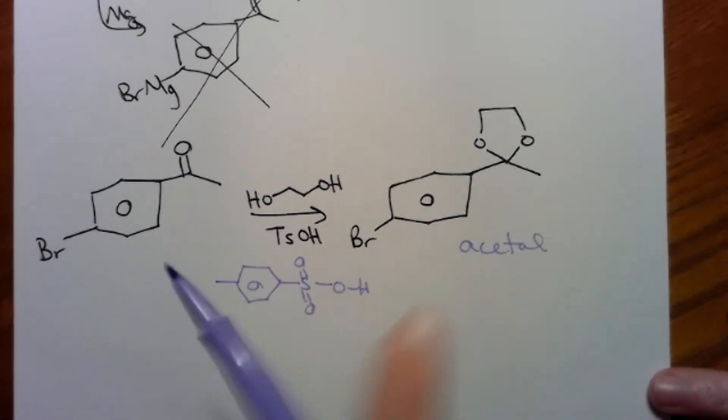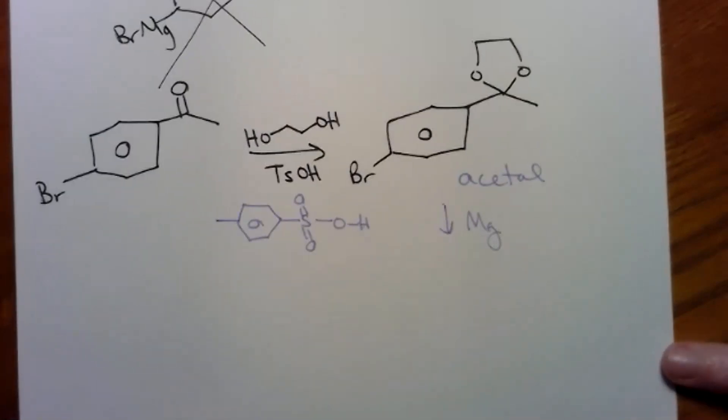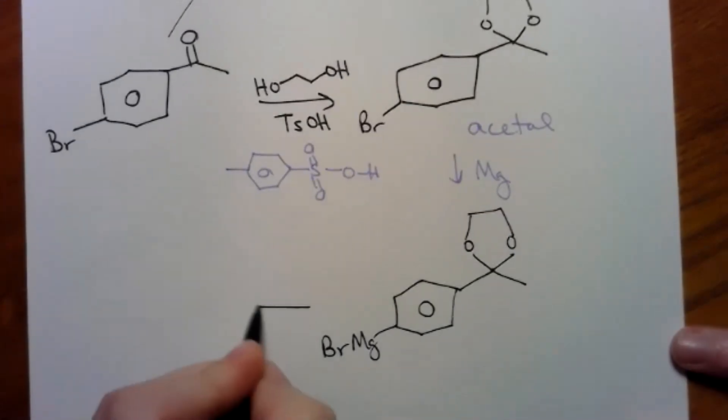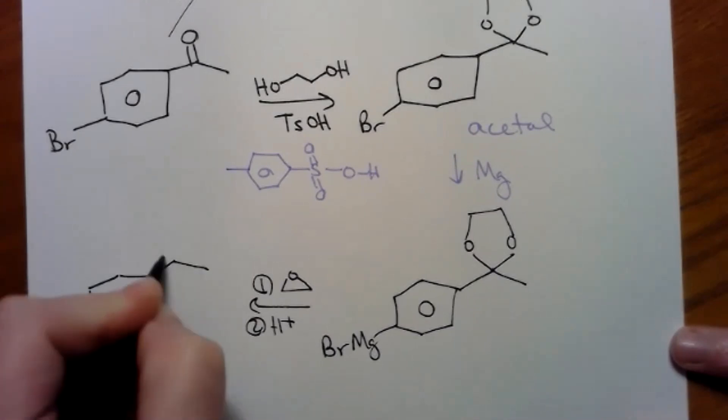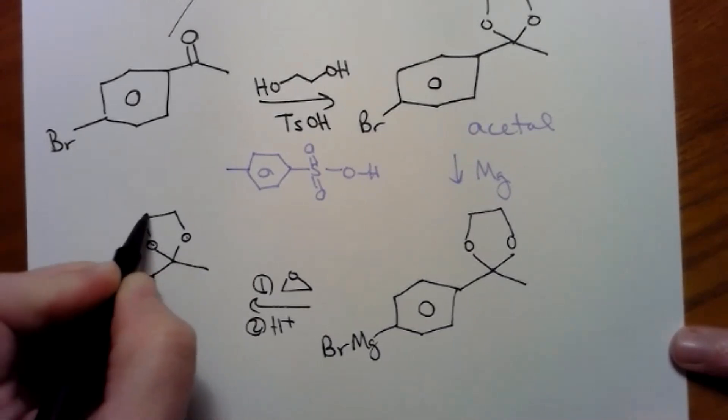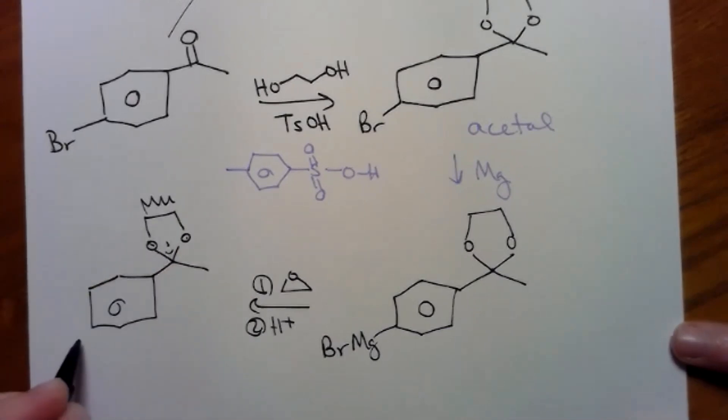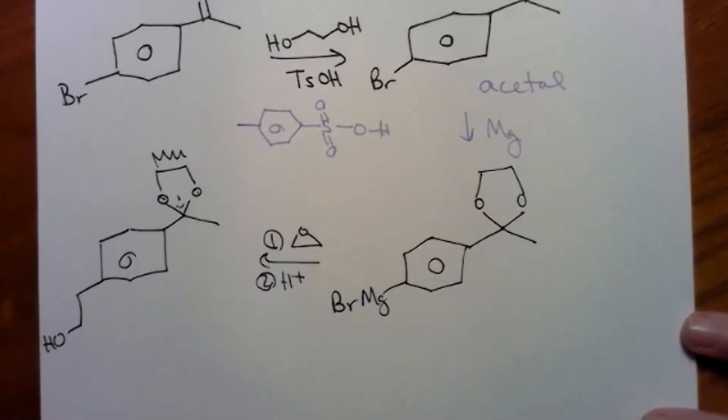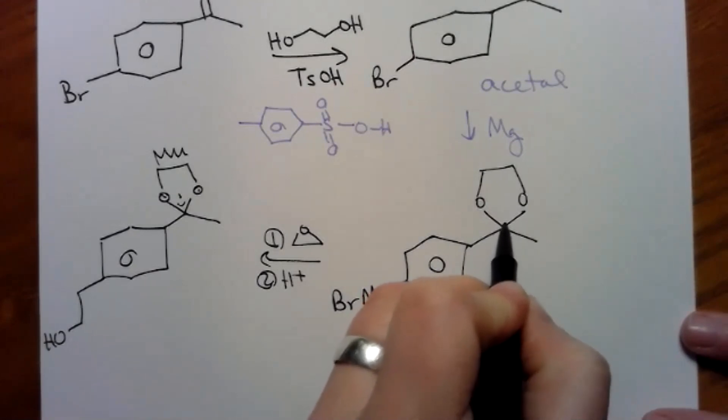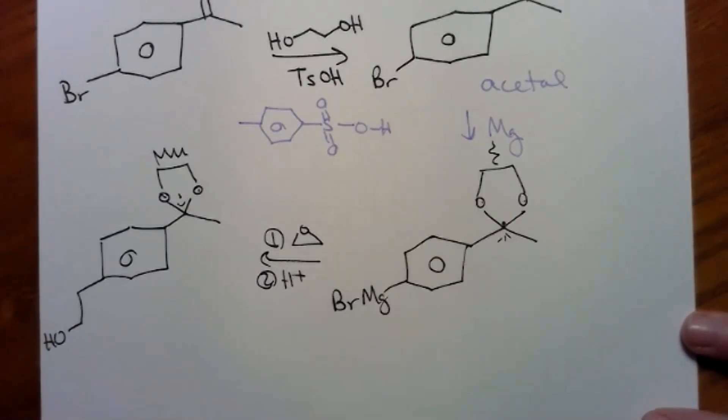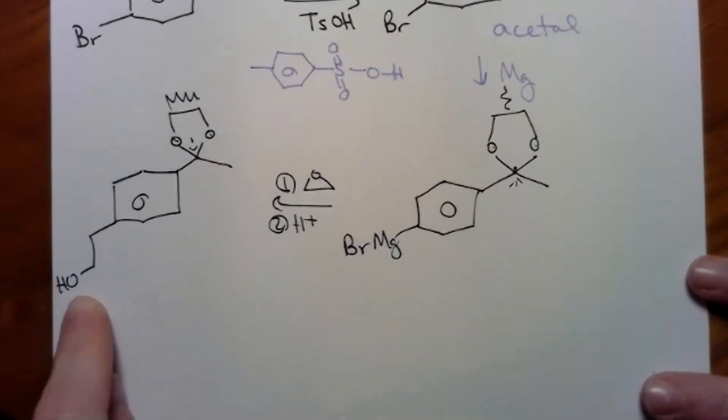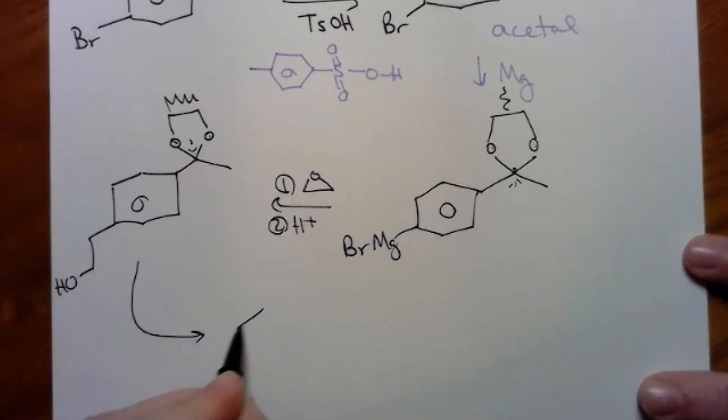Once I have this acetal, acetals are stable in base, so I can add my magnesium now and expect my Grignard to form. Because I don't have a ketone that's going to disturb the peace. My ketone is disguised. Next, make my Grignard, add an epoxide first, acid work up next, to get here. Looks like Bart Simpson. And my epoxide, get me here. Also, it kind of looks like a little mouse.